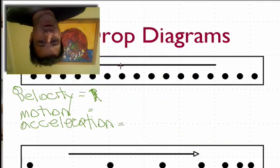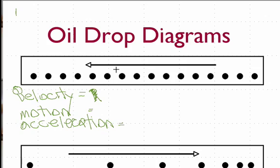The first thing I notice is the arrow is pointing to the left. The arrow tells you the direction the object is traveling, and the direction it's traveling is the direction the velocity vector is pointing. In this case, it's traveling to the left, so the velocity vector is pointing to the left.